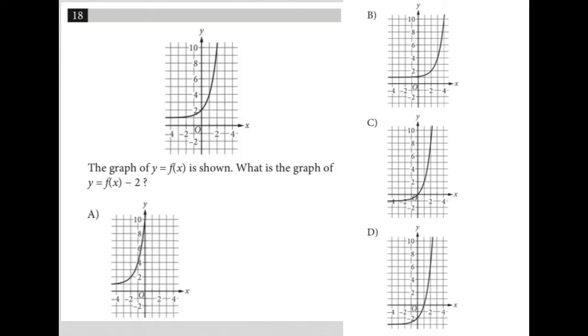So this question is what I call a diagram question. More specifically, it is a graph question. So the graph provided is here. I can tell some things about this graph. It looks like it has a y-intercept here at y equals 2. It has a horizontal asymptote here at y equals 1. But let's read the question and see exactly what it is we're looking to find. So the question says, the graph of y equals f of x is shown. What is the graph of y equals f of x minus 2?